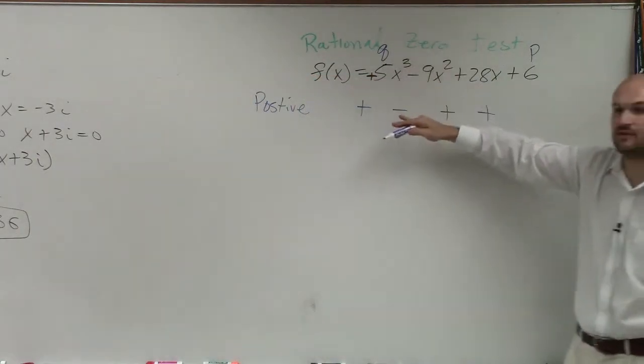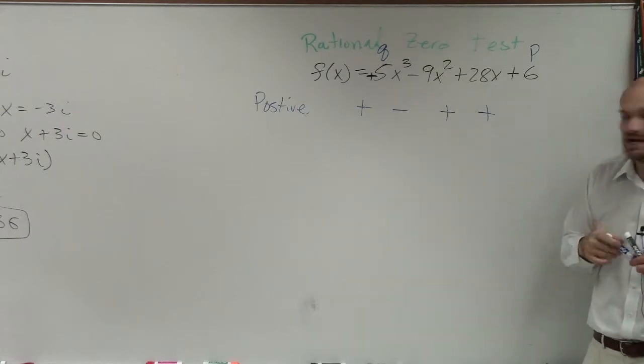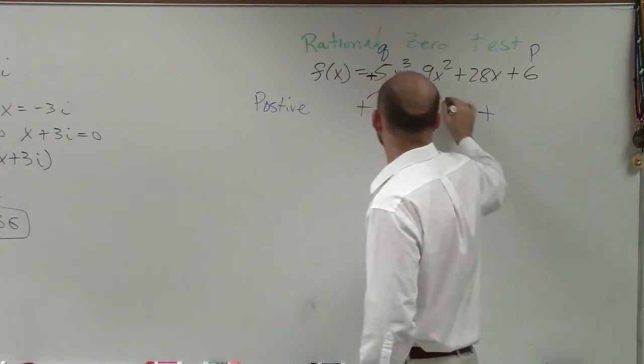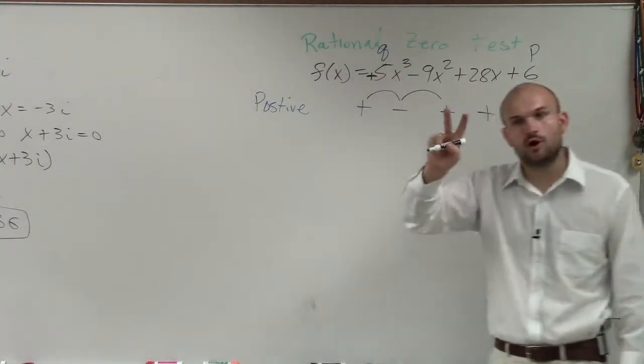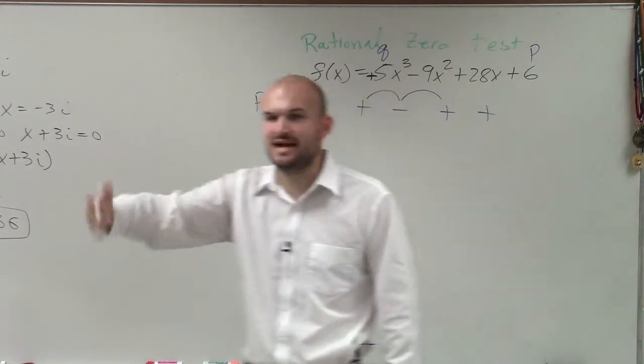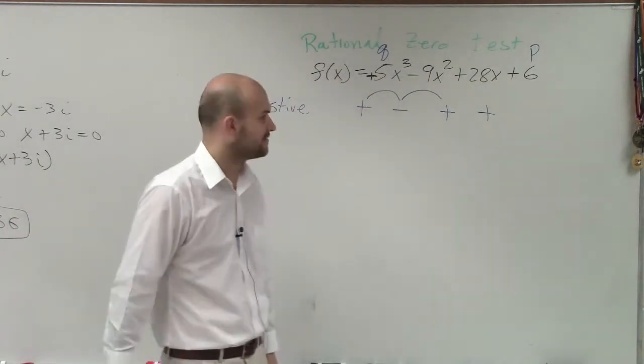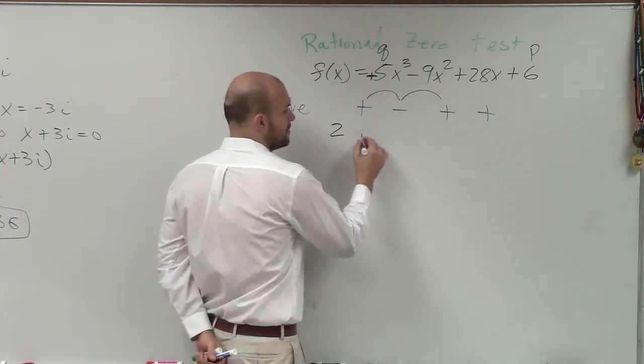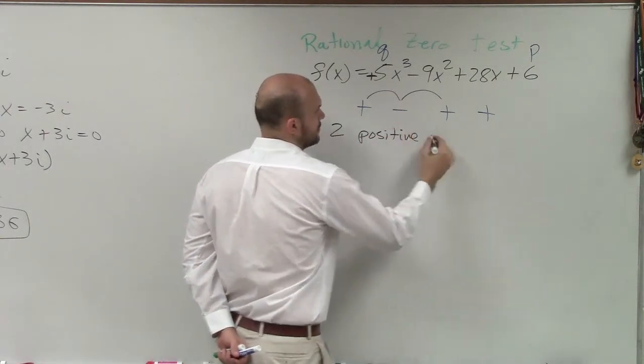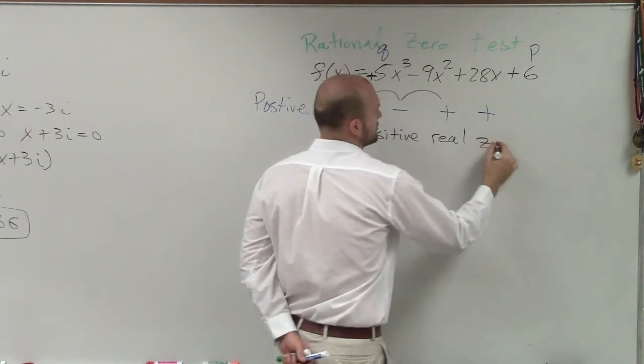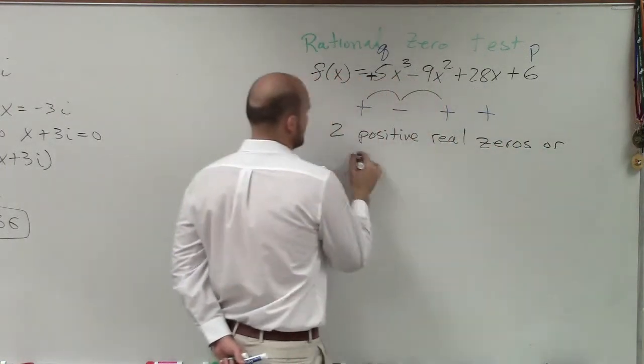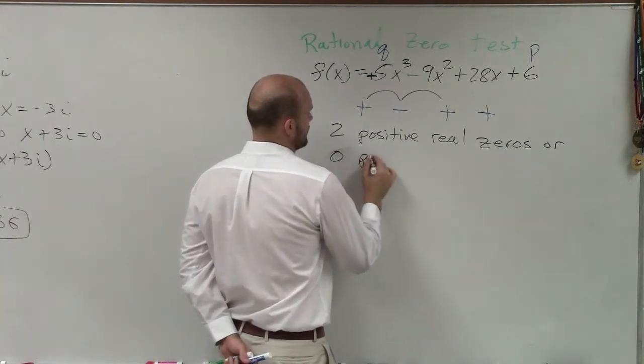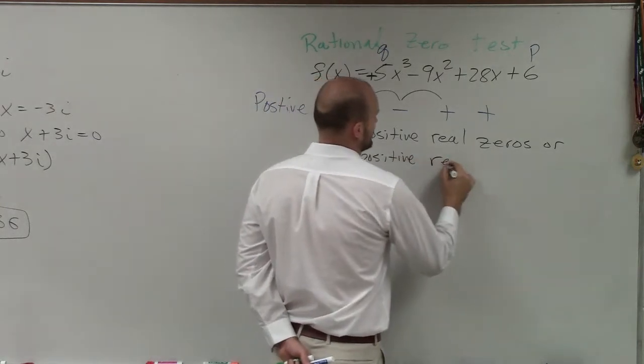All I did was I just brought down the signs. And by bringing down the signs, what I can now determine is how many times does the signs change? And here, I have two alternating signs. We go to positive to negative, and then negative to positive. So when I have two sign changes, that means I have two positive real zeros or zero positive real zeros.